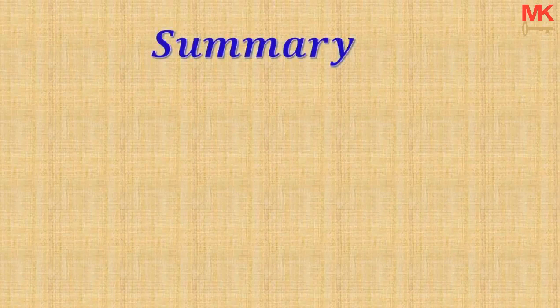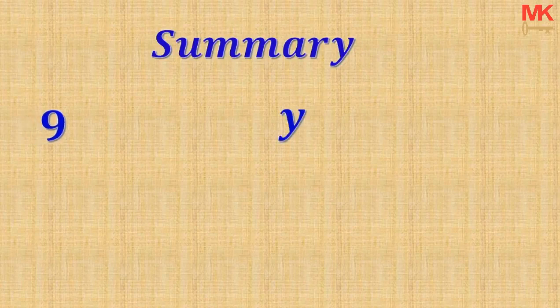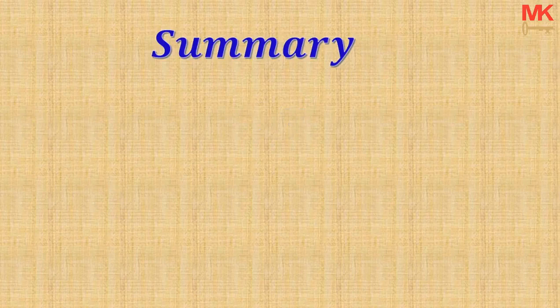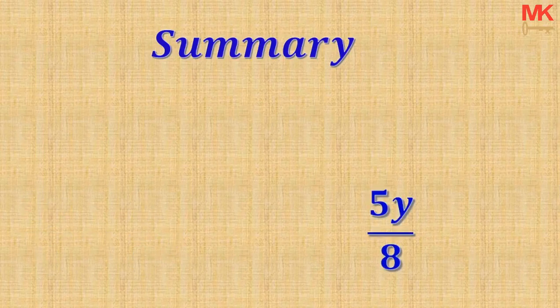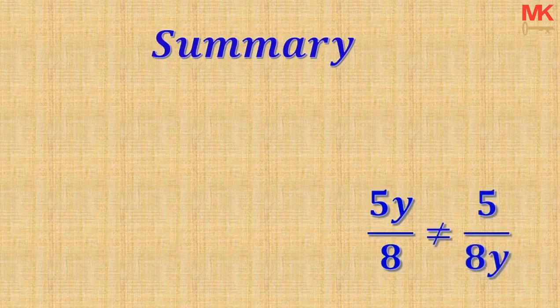Let us quickly take a summary of what you have learnt in this video. A coefficient is a number that is attached to a letter. When we join 9 and the letter Y using the multiplication operation, then 9 becomes the coefficient of Y. We also learnt that the fraction 5Y over 8 is exactly the same as 5 over 8 times Y, with Y functioning as the numerator. However, the fraction 5Y over 8 is not equal to 5 over 8Y where Y is functioning as a denominator — so the two fractions are not equal.